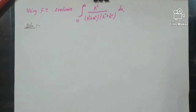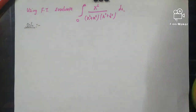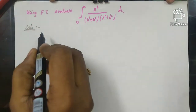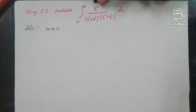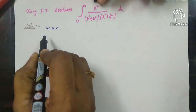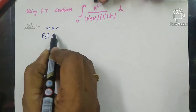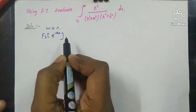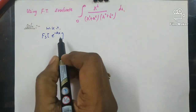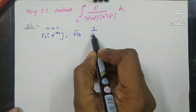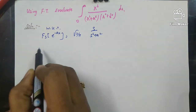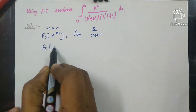If you look at this question, we will use a well-known result — the Fourier sine transform of e^(−ax). If we take the sine transformation and use a dummy variable, the Fourier sine transform Fs of e^(−ax) is equal to root of (2/π) times s divided by (s² + a²).